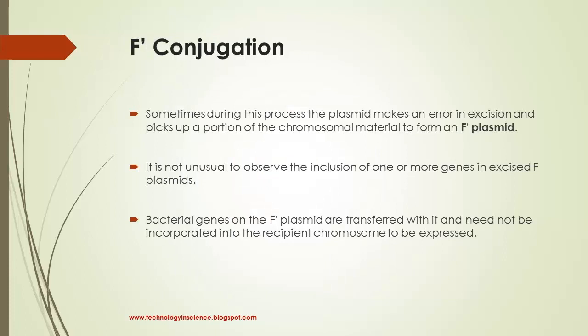Let us see what is F prime conjugation. Because the F plasmid is an episome, it can leave the bacterial chromosome. Sometimes during this process, the plasmid makes an error in excision and picks up a portion of chromosomal material to form the F prime plasmid. It is not unusual to observe the inclusion of one or more genes in the excised F plasmid.